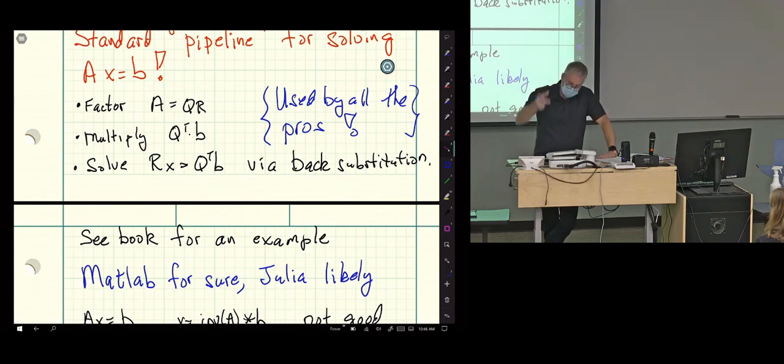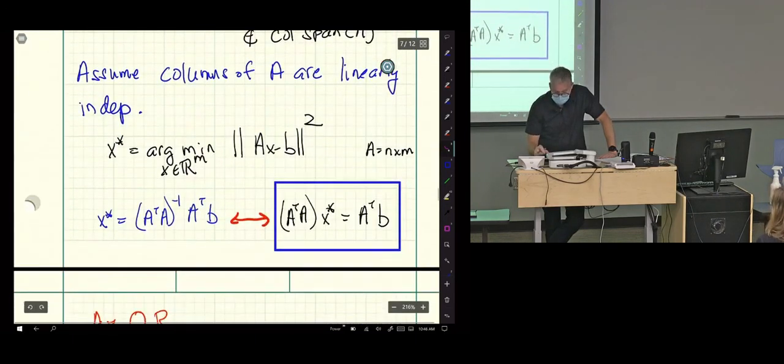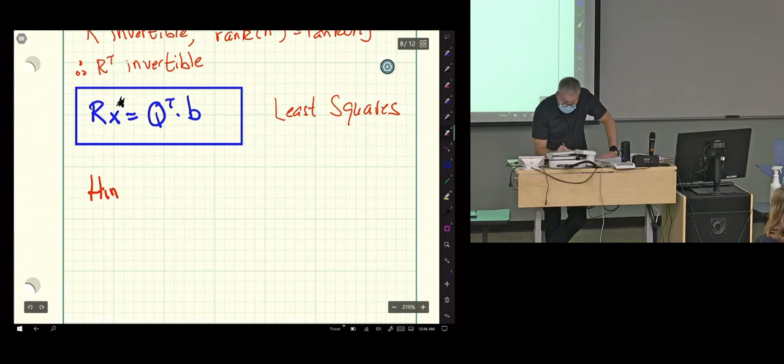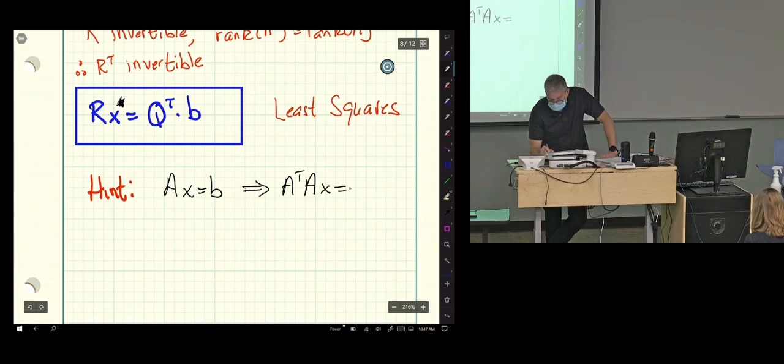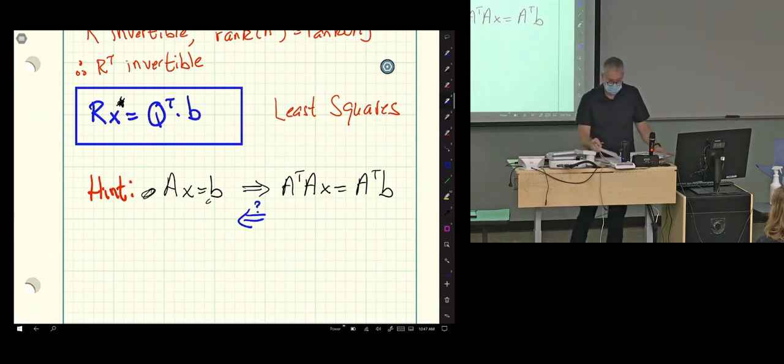So absorbing all this at the speed we're going through it right now is going to be a little bit difficult. I get it. But just go back. Now that you're warned, you get the same formula. I'll go through and check why. And then the hint is. So that's always true. If I multiply on the left by A transpose here and here. And the question is when can you go back the other way? And that's when the columns of A are linearly independent. It all fits together. It's surprising.